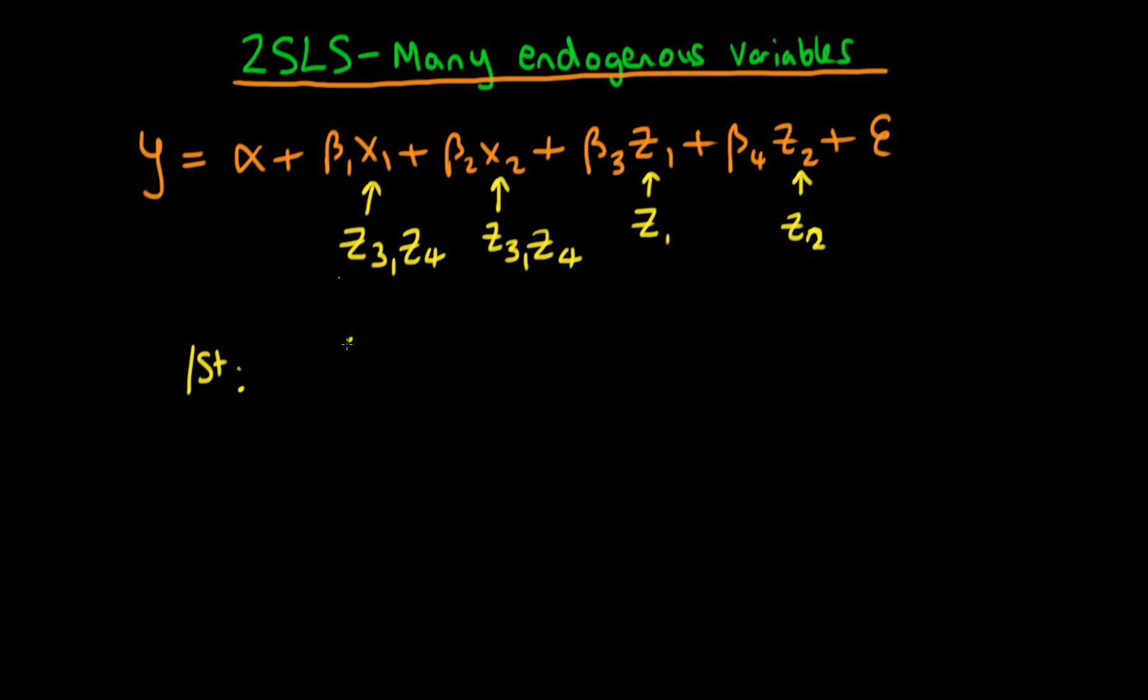So the idea here is that our first stage looks something like this. The first first stage regression is a regression of x1 on, first of all, we're going to have our two exogenous variables. So we're going to have delta 1 times z1 plus delta 2 times z2. And then we're going to include our two instruments, so we're going to have z3 and z4. So that's going to be our first stage regression. But the idea with this first stage regression is then what we do is we take the estimated values of each of these parameters, and we use them to predict x1. So we call that x1 hat.